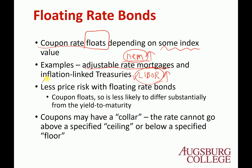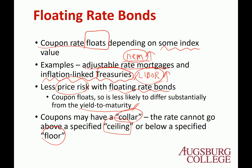There is also called inflation-linked treasury. When you buy treasury securities, some people worry that inflation may erode your purchasing power. So it's linked with the inflation rate and adjusts accordingly. This floating rate bond has less price risk because the coupon rate floats, so it is less likely to differ substantially from the yield to maturity. The coupon may also have a collar — a ceiling which is the maximum rate, or a floor which is the minimum rate, such as a maximum of 8% and a minimum of 2% in the covenants.